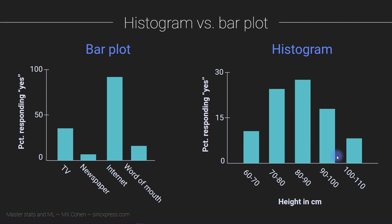But here changing the ordering doesn't make sense. You wouldn't put 60 to 70 centimeters over here. So if you can swap the order of the bars then you're looking at a bar plot. And if it doesn't make sense to swap the order then these are numeric data and you're looking at a histogram.